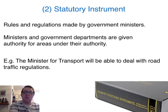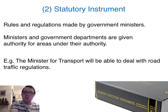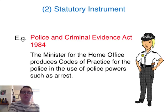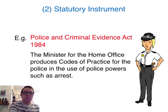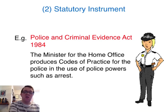The second type of delegated legislation is called a Statutory Instrument. These are rules and regulations made by government ministers. Each government minister has a department that they are responsible for and the authority to create such laws. So for example the Minister for Transport will be able to deal with road traffic regulations, such as setting the speed limit on motorways for vehicles, which would affect everyone across the country. Another example of a Statutory Instrument is the Police and Criminal Evidence Act 1984, otherwise known as PACE. Here the Minister for the Home Office — the Home Secretary — produces codes of practice for the police which give them guidance as to how they can exercise their specific powers such as stop and search and the power of arrest.